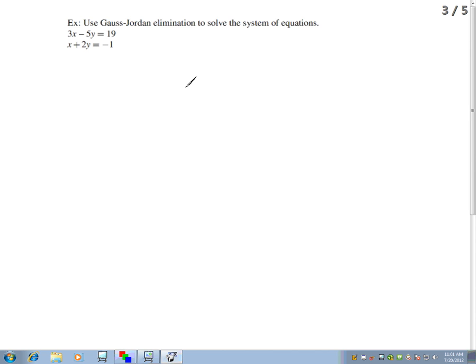Use Gauss-Jordan elimination to solve the system of equations. We have the system 3x minus 5y equals 19, and then the other equation is x plus 2y equals negative 1.